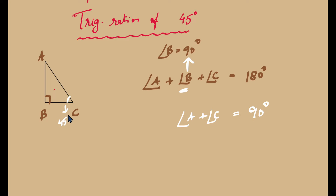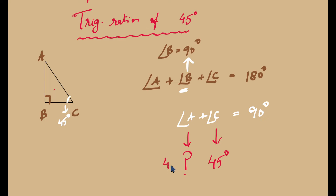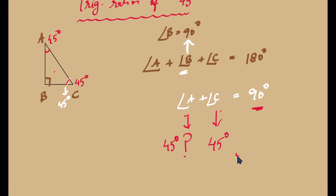Now let us assume that angle C is 45 degrees, since we are interested in finding sin 45° and cos 45°. If angle C is equal to 45 degrees, then angle A will also be equal to 45 degrees, because only then do they add up to 90 degrees. So this triangle is going to be an isosceles triangle.